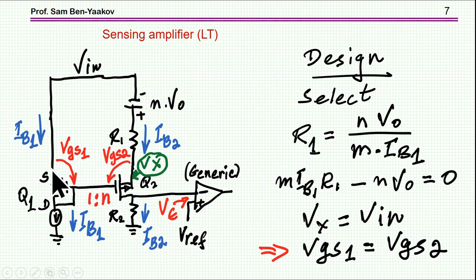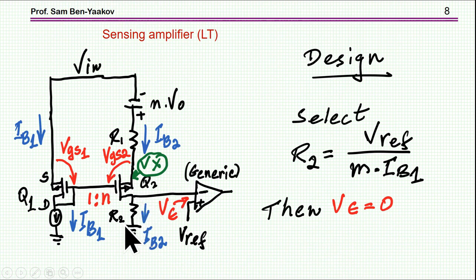So this imposes an equal VGS. Now I'm going to choose R2 such that it will be equal to V reference over IB2, which is M times IB1. This voltage here.